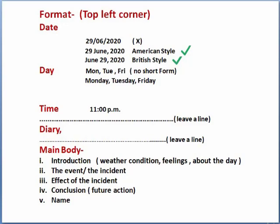First, we should discuss the format of diary writing. At the beginning, we write the date on the left. There are two accepted styles of date writing. The first is known as American style, where we write dates like 29 June 2020. The second is British style, where we write June 29, 2020. Writing the date as 29-6-2020 is the wrong way. If anyone writes like that, marks will be deducted. So strictly follow only these two styles — American style and British style.